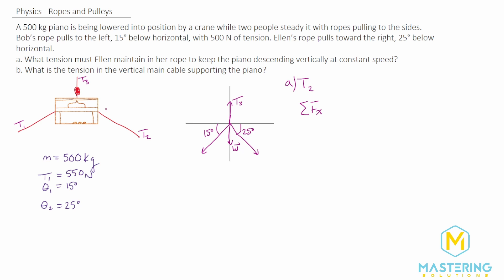To find T2, let's first sum the forces in the x direction. The piano is moving but at a constant velocity, so it will be in dynamic equilibrium — the sum of forces in x equals zero. We have T1 plus T2 equals zero in the x direction since there's no acceleration. In the x direction, both components are adjacent to their respective angles.